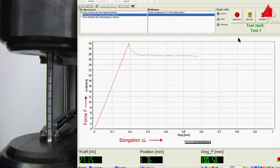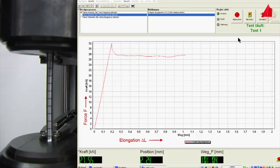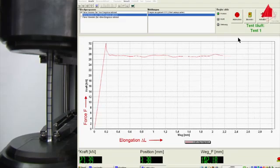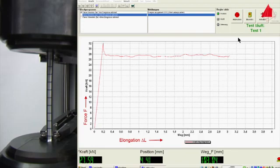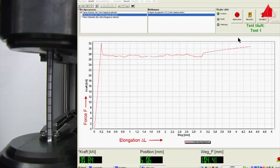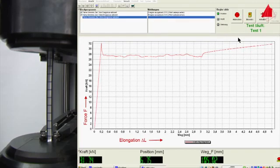In the next stage of the tensile test, an almost constant force level with slight fluctuations occurs. This phenomenon is called the Lüders effect. After a certain strain, known as the Lüders strain, the force increases again. The material opposes an increasing force against the imposed elongation. It strain hardens.